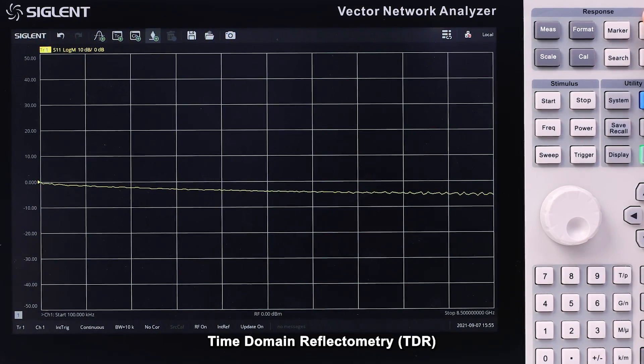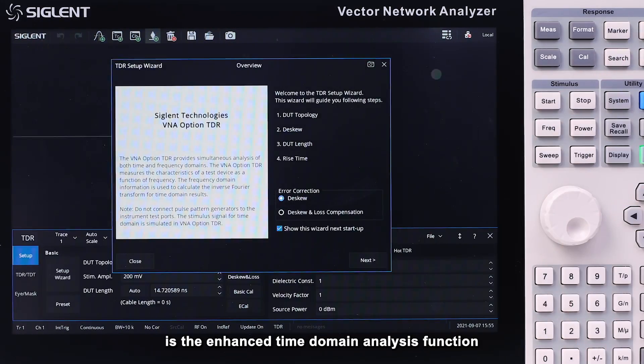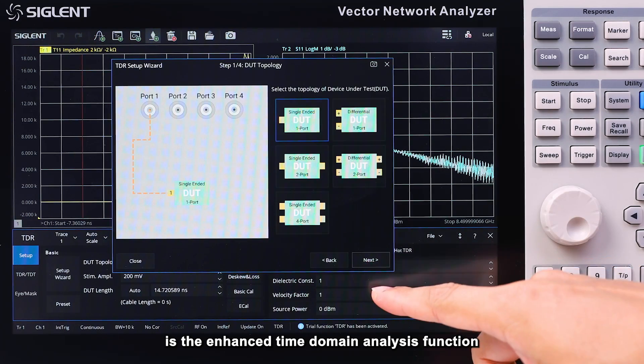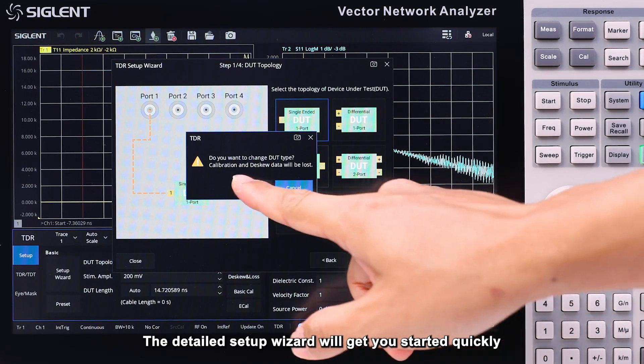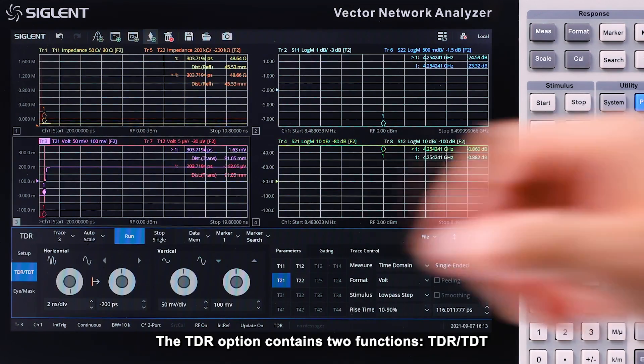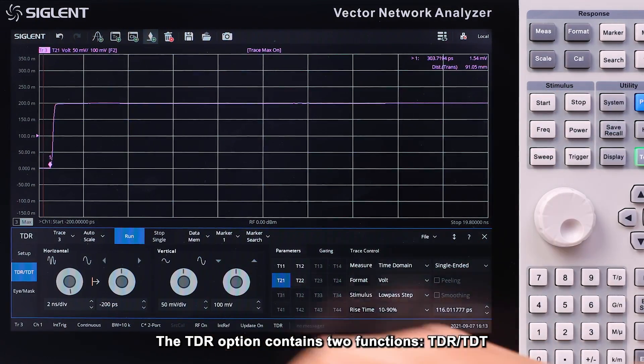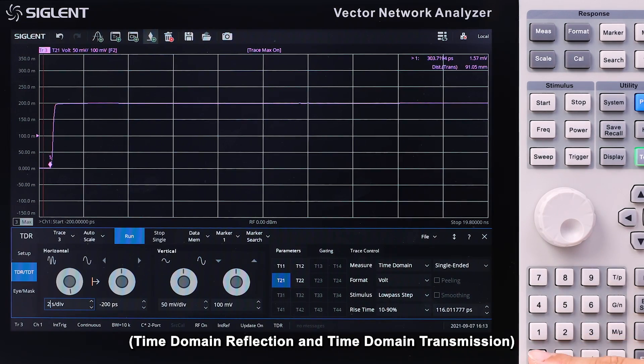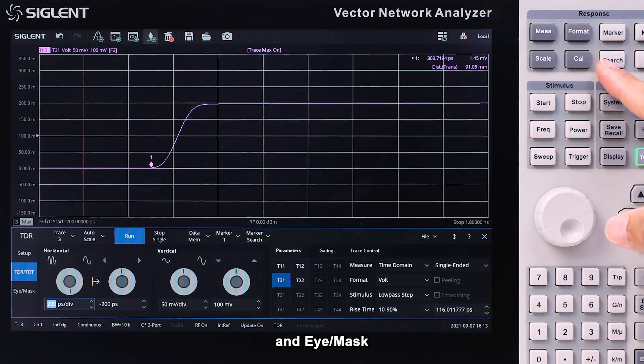The time domain reflectometry or TDR option is an enhanced time domain analysis function, with a detailed setup wizard to help you get started very quickly. The TDR option contains TDR TDT functions, which is time domain reflection and time domain transmission, as well as an eye and mask diagram.